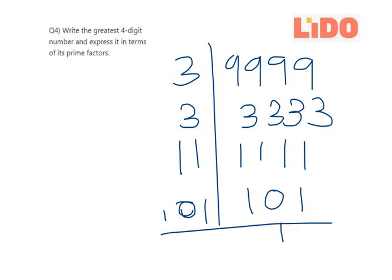So this is your final answer. When you want to express 9999, you can write it as 3 × 3 × 11 × 101.